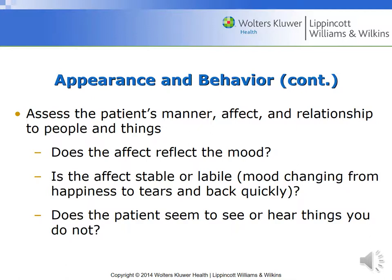Assess the patient's manner, affect, and relationship to people and things around them — does their affect reflect their mood? Is their affect stable, or is it labile, meaning their mood changes from happiness to tears and back quickly? Also look for hallucinations — does the patient seem to see or hear things that you do not? It's important to ask directly: 'Do you hear or see things that people say aren't there?' This can give the examiner a lot of insight.